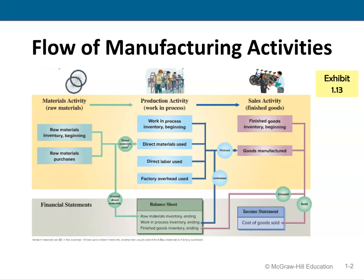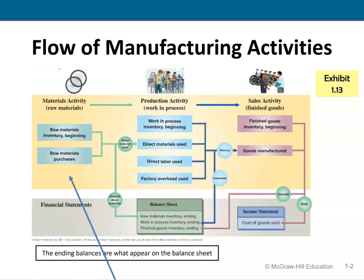We then move to work in process. We again start with a beginning balance. We take the materials that are issued, add direct labor, and add factory overhead that is applied. Anything left over in raw materials will be part of the balance sheet, and anything left over in work in process will also be part of the balance sheet. Once we have completed products, we send them to finished goods — those are goods ready for sale, called goods manufactured — and any ending balance appears on the balance sheet.